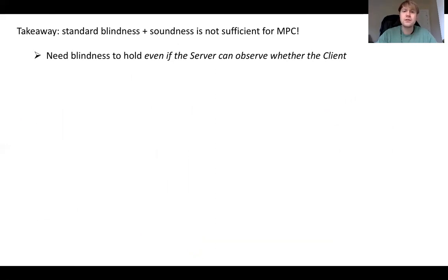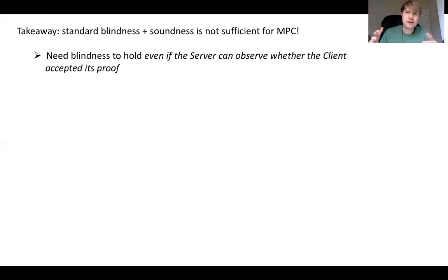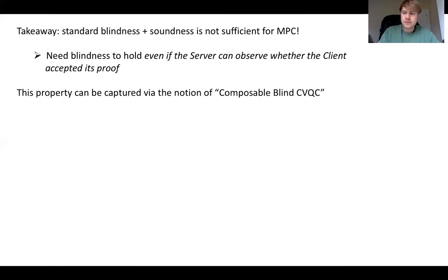The takeaway is that simply matching together standard blindness and soundness is not sufficient for achieving the full notion of MPC. In particular, what it really boils down to is that we need this notion of blindness to hold even if the server can observe whether the client accepted its proof. This sort of thing can be captured via the notion of what I call a composable blind CVQC.